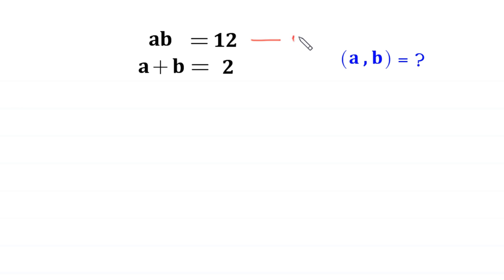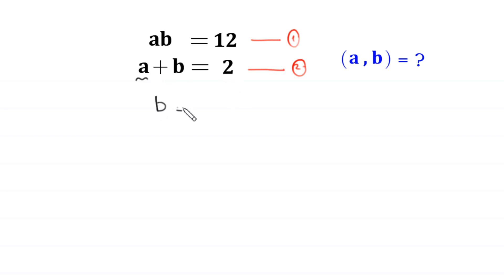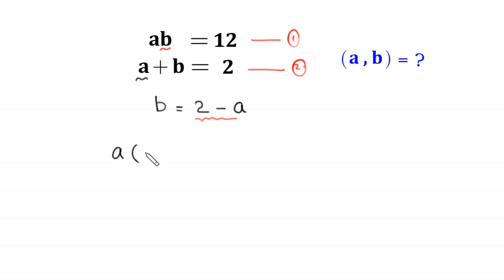Let us call this equation 1 and this equation 2. From equation 2, we find the value of b. We move a to the right hand side, so b will be equal to 2 minus a. Now in equation 1, we replace b with this value of b, 2 minus a. Then equation 1 will become a times (2 minus a) is equal to 12.